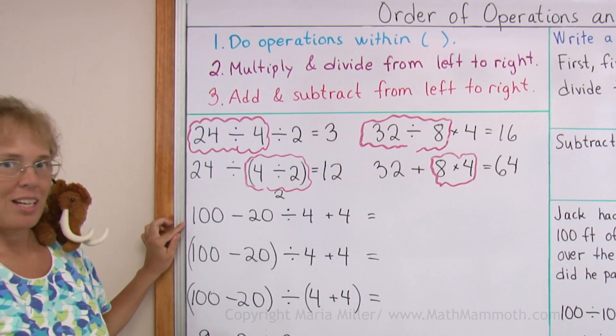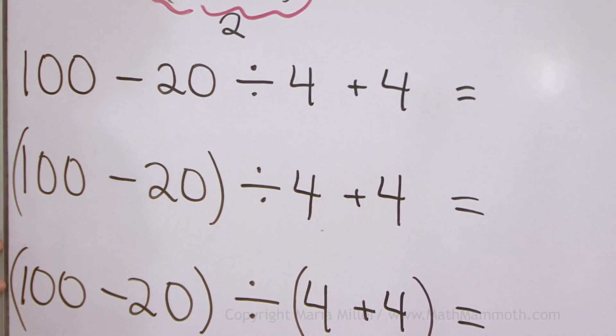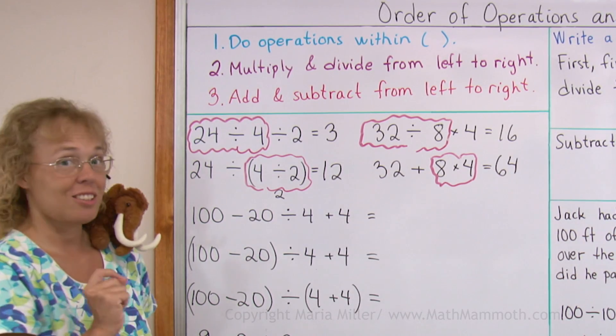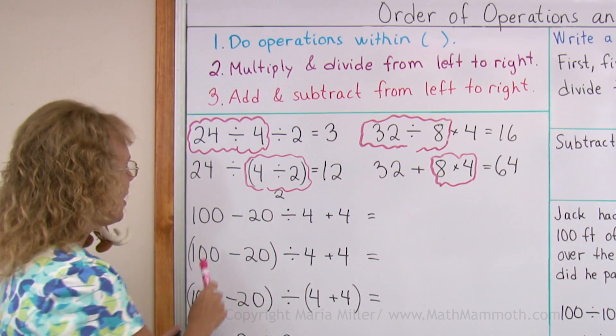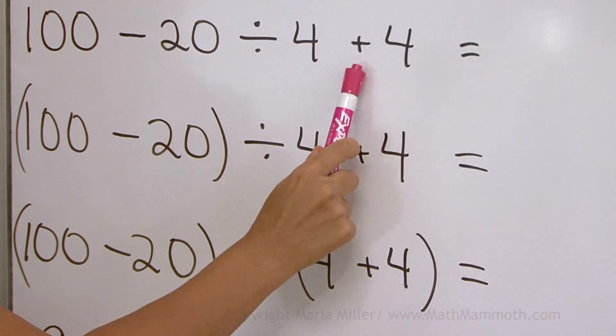Now we have three expressions that have the same numbers and the same operations. But you can see there's differences. There's parenthesis here and there. So we would expect the answers to be different, right? First one. Subtraction, division, addition. So this is done first.